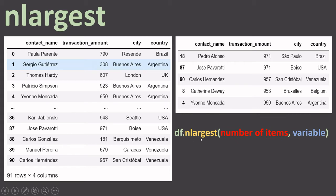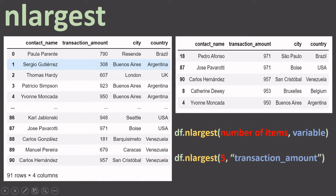The syntax is df.nlargest(), then inside the parentheses you put the number of items you want to filter — here we filtered five — and then you put the variable name in which you want to look for the highest amount, which is transaction amount. So the exact syntax will look something like this. Let me take you to Jupyter Notebook and explain this practically.